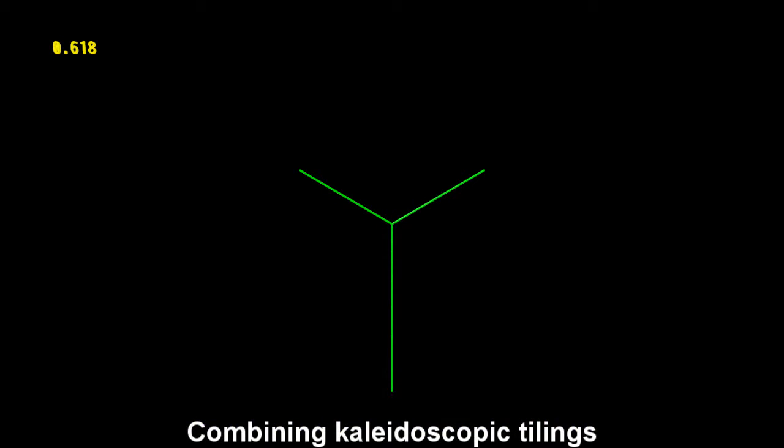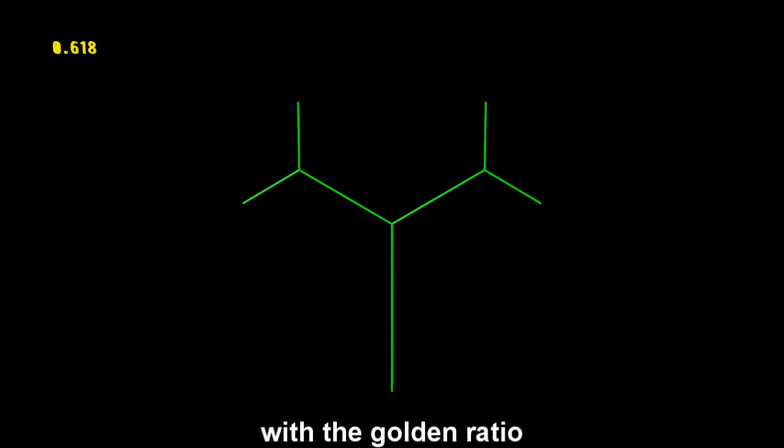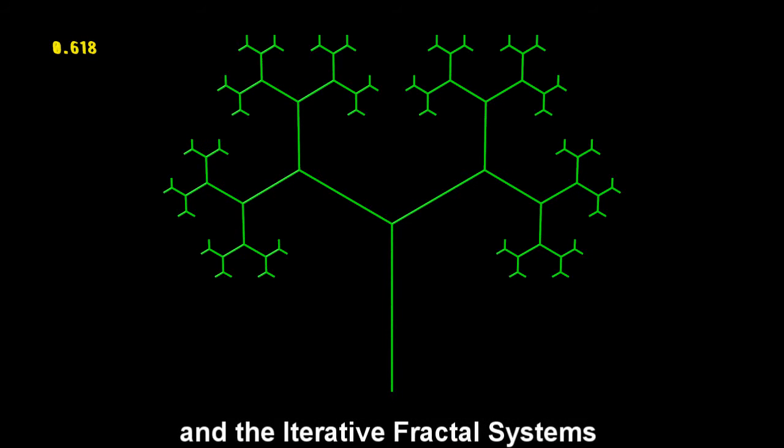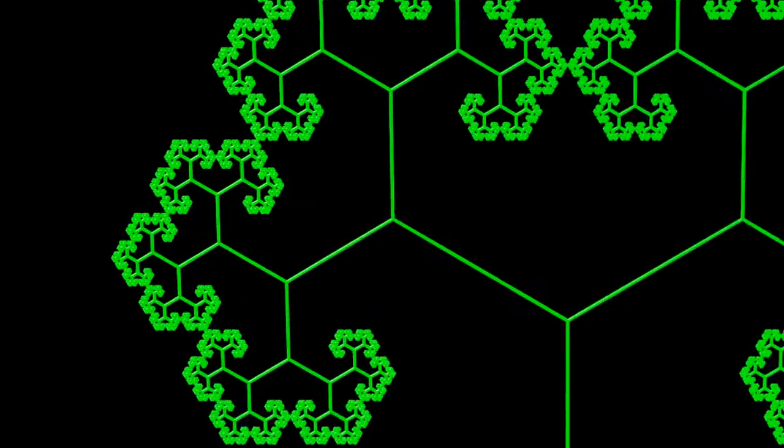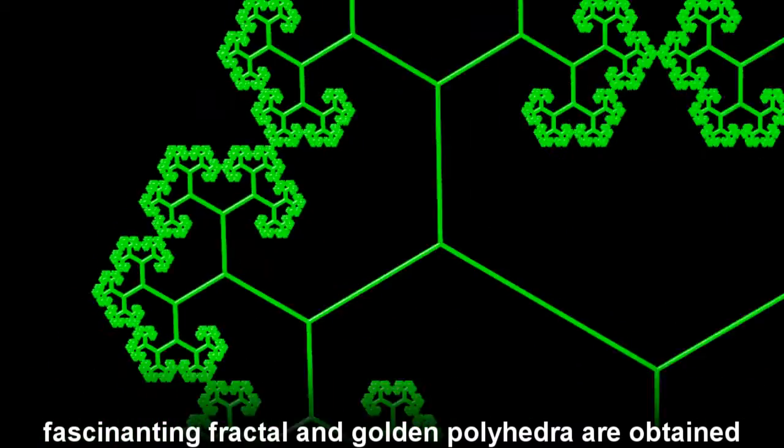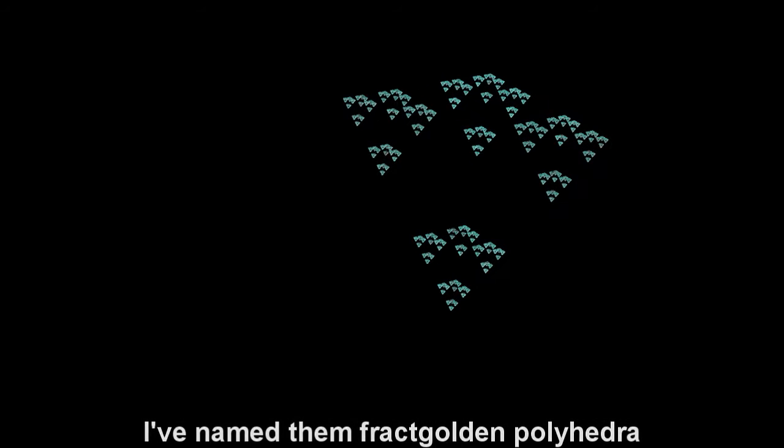Combining kaleidoscopic tilings with the golden ratio and the iterative fractal systems shown in chapter 9, fascinating fractal golden polyhedra are obtained. I've named them fractal golden polyhedra.